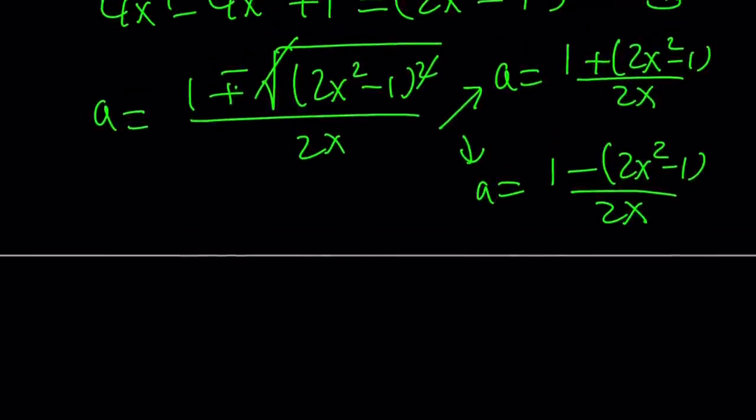We're going to get two solutions from here. A is going to be 1 plus 2x squared minus 1 over 2x, or A is going to be 1 minus 2x squared minus 1 over 2x. Notice I'm keeping the 2x squared minus 1 inside the parentheses because it'll be negated in the second case. If you simplify the first part, 1 is going to cancel out. 2 is going to cancel out. x is going to cancel out. You're going to end up with A equals x, which is cool.